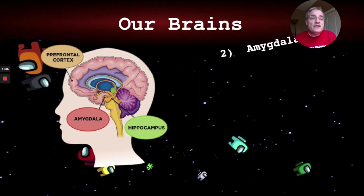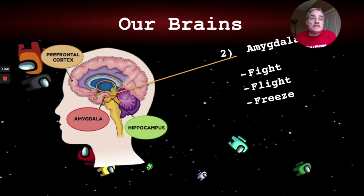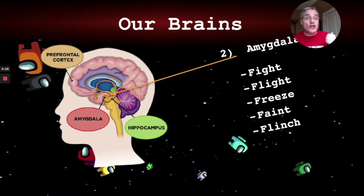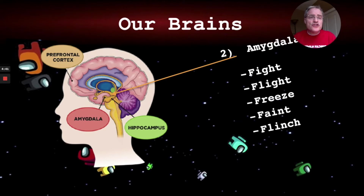The amygdala is also important — it's the security guard. If it senses danger, it says: fight, protect yourself; take flight, get out of there; freeze, be a statue; faint, which is like falling asleep suddenly and could cause you to fall; or flinch — alerting your attention to what might be dangerous. For example, if a door behind me got slammed, I would immediately turn to look for danger.